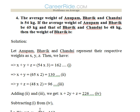Fourth question: The average weight of Anupam, Bhavik and Chandni is 54 kg. If the average weight of Anupam and Bhavik is 65 kg and that of Bhavik and Chandni is 48 kg, what is the weight of Bhavik? Let Anupam, Bhavik and Chandni represent their respective weights as X, Y and Z.